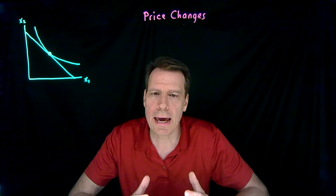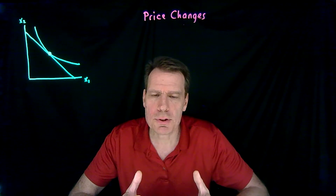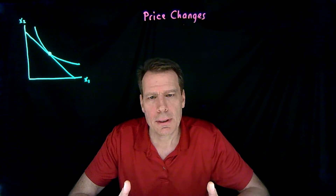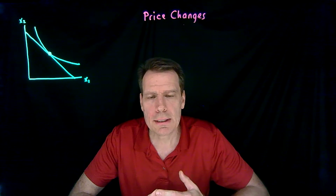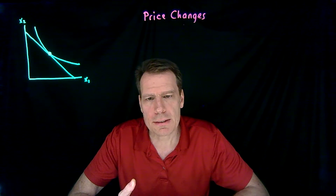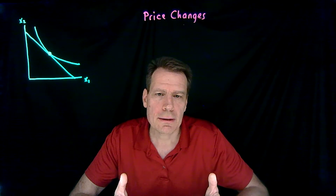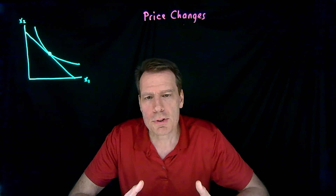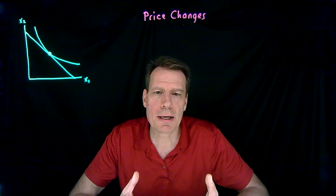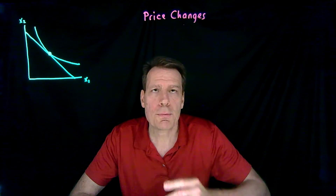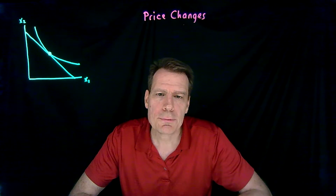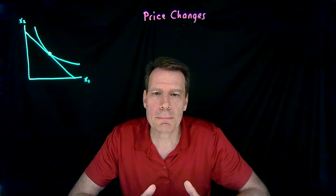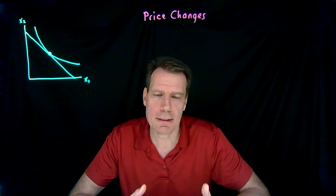We've been talking about what happens to your optimal consumption bundle as your economic circumstances change, where your economic circumstances are defined by your income and the prices that you face. We've seen that if you experience an increase in income, the change in the optimal consumption bundle is determined solely by the income effect. Now we turn to price changes, and we'll find that the change in your optimal consumption bundle will be determined by both an income and a substitution effect.